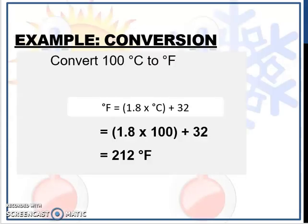For example, convert 100 degree Celsius to degree Fahrenheit. This is the formula. You have 100 degree Celsius. So 1.8 times 100 degree Celsius plus 32. The answer is 212 degree Fahrenheit.